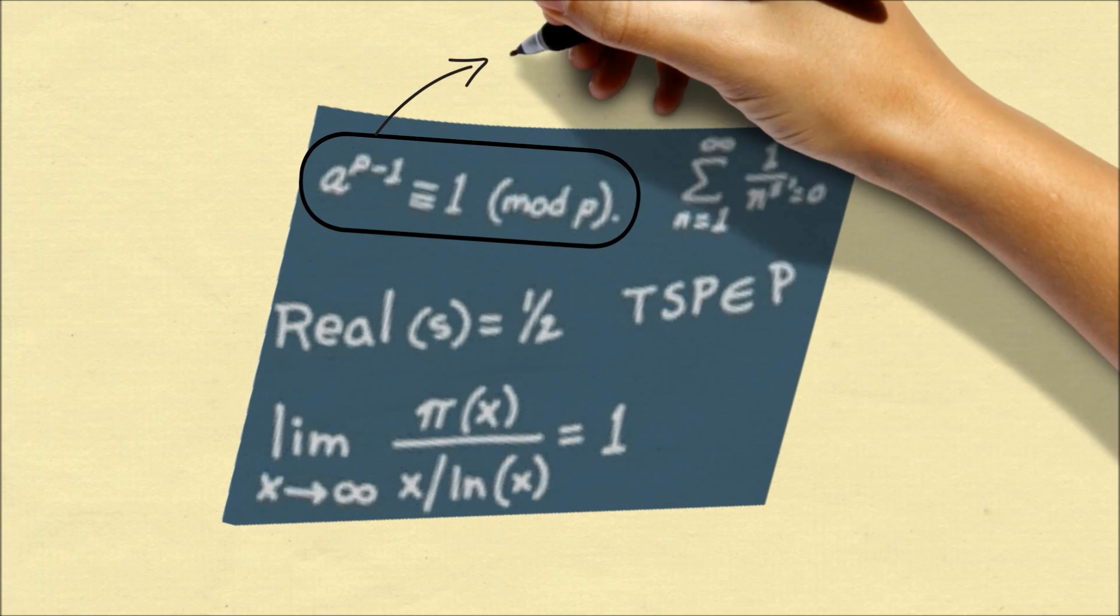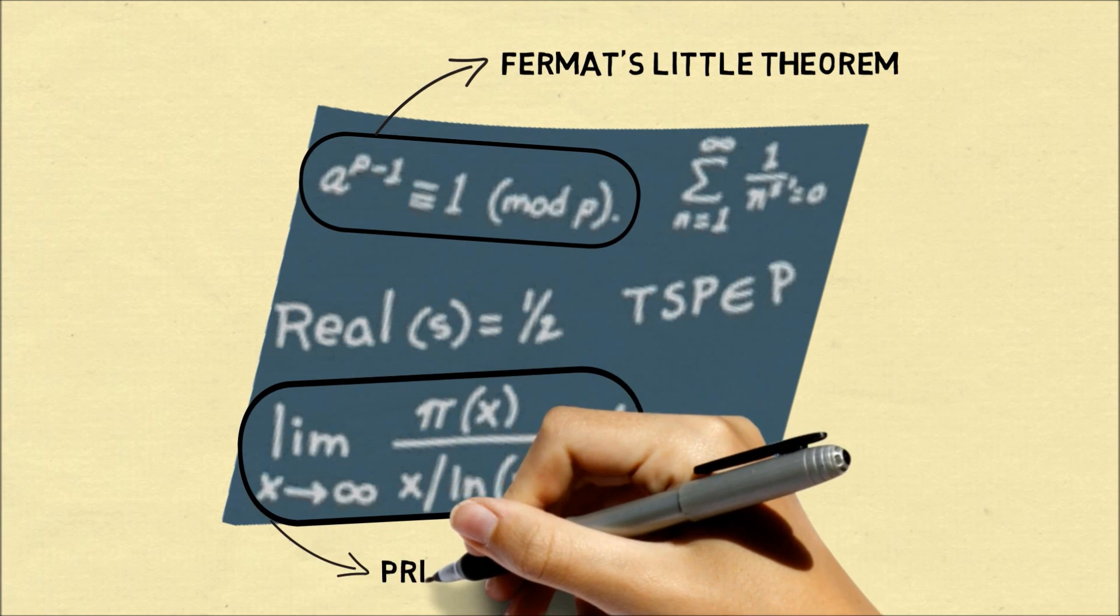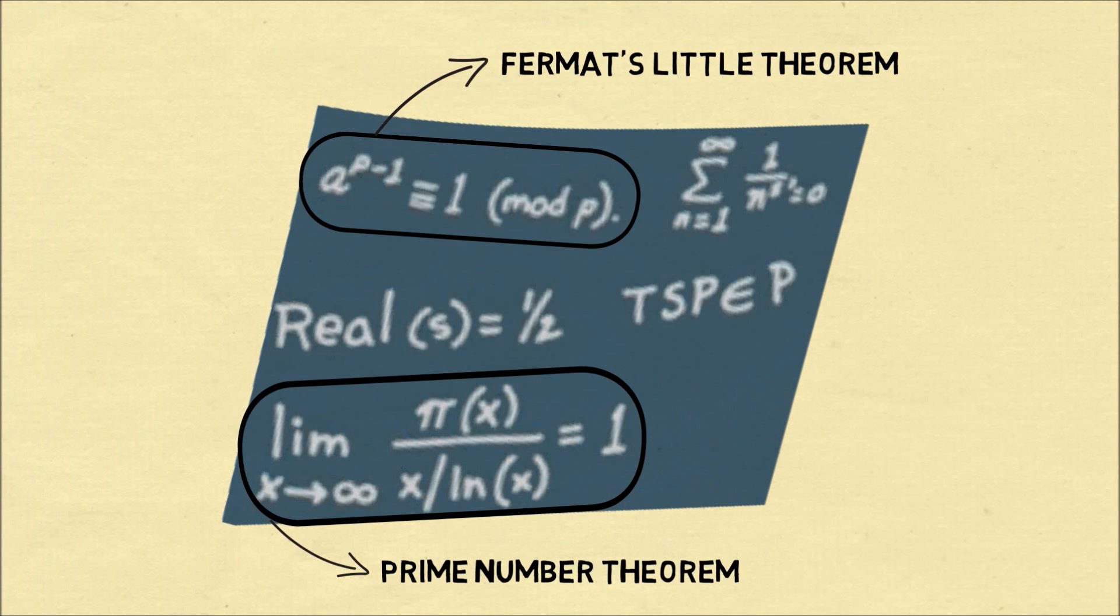This equation on the upper left hand side is known as Fermat's Little Theorem, which is an interesting result in number theory. On the bottom is another result from number theory, known as the Prime Number Theorem, which describes the density of primes.